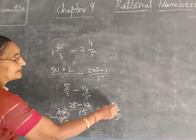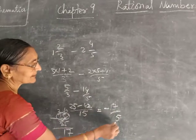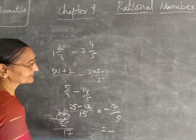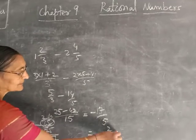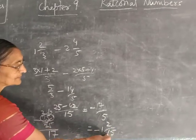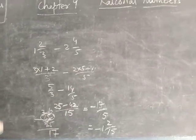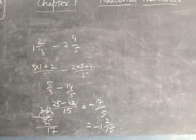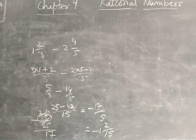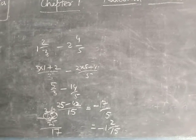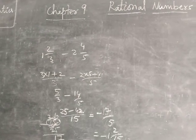So it is also an improper fraction. You have to change it to a mixed fraction: put minus first, then 15 by 15 gives 1 and remainder 2 by 15. So the answer is minus 1 and 2 by 15. Like this, you have to do the subtraction of mixed fractions. I hope you understood the addition and subtraction of rational numbers. Next class we will study some more. Thank you.